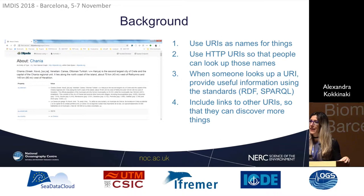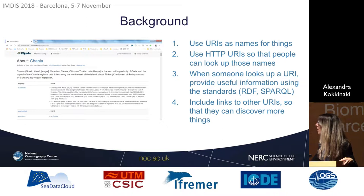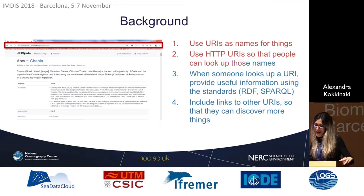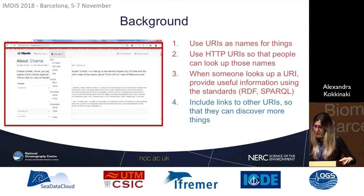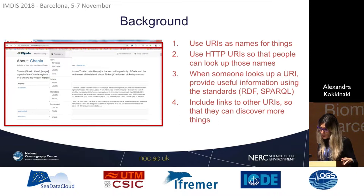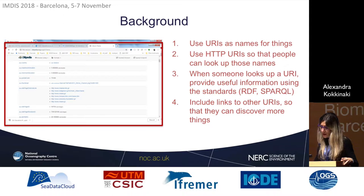So what is linked data? It can be referred to as a technology or just a set of rules. The first rule is to use URIs as names for things — I've used Chania, my hometown, from DBpedia as an example. It's better to use HTTP URIs so that other people can look up those names. When they look up those names, it's important to provide useful information using standards like the Resource Description Framework and SPARQL. And it's even better to include links to other URIs so that they can discover more things.